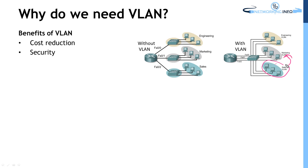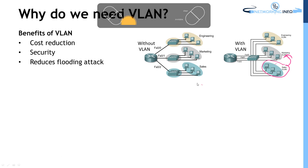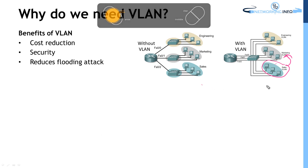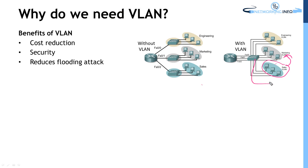Because they are not members of the same broadcast domain. The next benefit is reduced flooding attacks. A flooding attack can occur when someone sends unnecessary data or spoofs your network, generating a lot of broadcasts — for example, a MAC flooding attack. With VLAN, this attack is confined to only the sales department and will not affect other VLANs, because flooding will not pass to another VLAN.